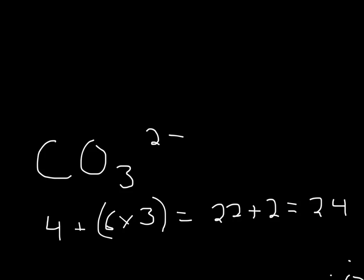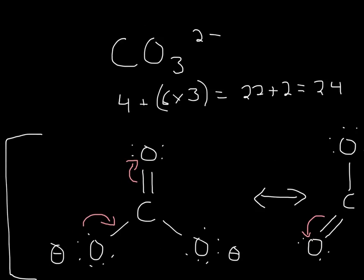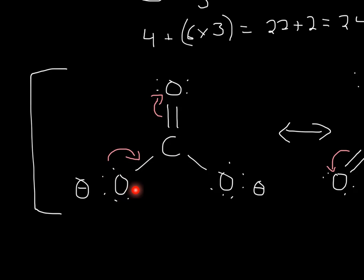Now, what you usually want to do for this structure is put the least electronegative atom in the middle, and then surround it with your oxygens. That's what I did here. Put carbon in the middle and your oxygens surrounding it.